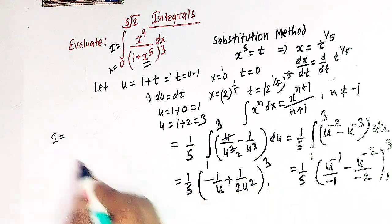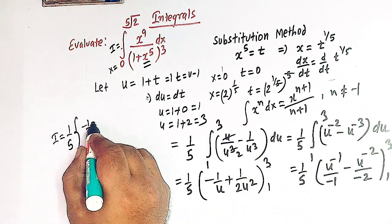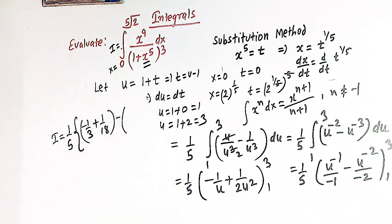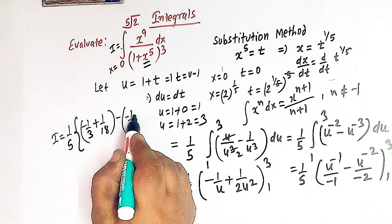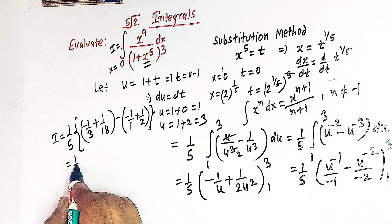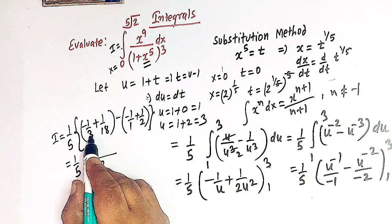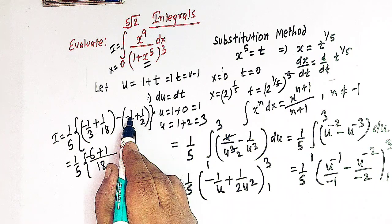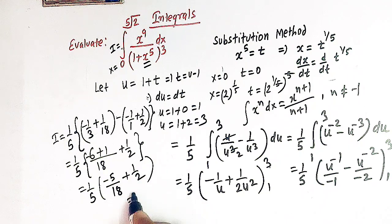Substituting the limits and taking the difference, we have 1 over 5 times: first substituting u equals 3 gives minus 1 over 3 plus 1 over 18; then substituting u equals 1 gives minus 1 over 1 plus 1 over 2. Taking the difference: the expression inside becomes minus 1 over 3 plus 1 over 18 minus the quantity minus 1 plus 1 over 2. With LCM 18 we get 1 minus 6 equals minus 5 over 18, and minus 1 plus 1 over 2 equals minus 1 over 2, so we add 1 over 2.